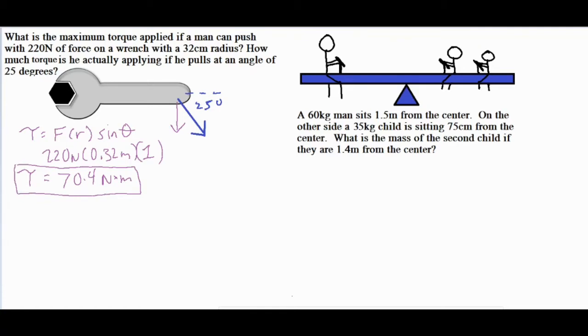Now for the second part of the question it says how much torque is he actually applying if he pulls at an angle of 25 degrees. In the picture over here I show that 25 degree angle. If you've ever pushed on a door at an angle or close to the hinges you would notice that it's a little bit harder to open because you'd either be decreasing your lever arm or radius, or you would be applying that angle which would decrease the force being applied to twisting or rotating that object.